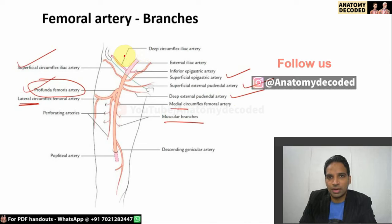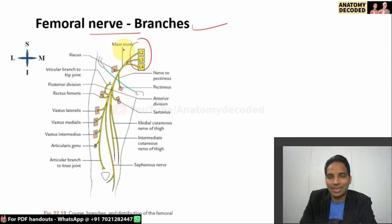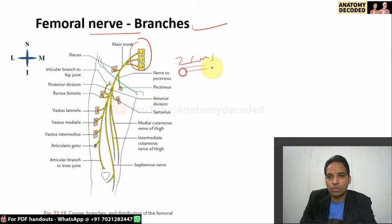The root value of the femoral nerve is L2, L3, L4 — dorsal divisions of the ventral primary rami. The obturator nerve has the same root value, L2, L3, L4, but from ventral divisions. The femoral nerve crosses the inguinal ligament, enters the femoral triangle, has about 2 centimeters of course within the triangle, and then divides into an anterior division and a posterior division.